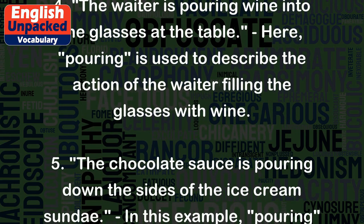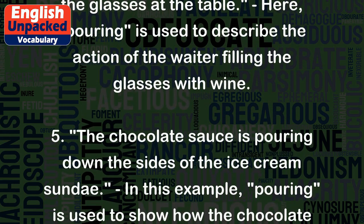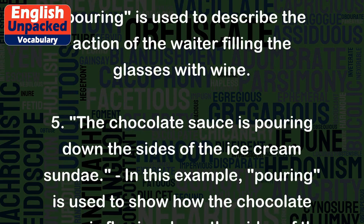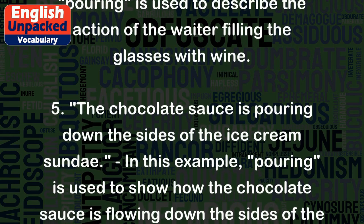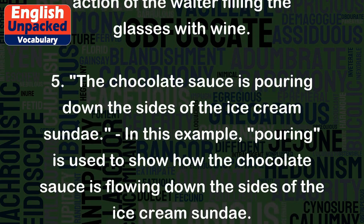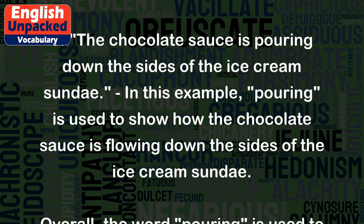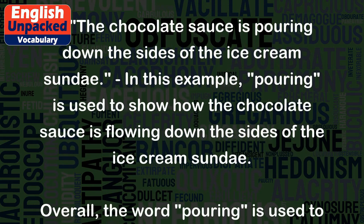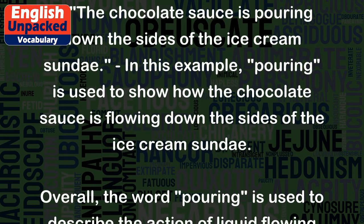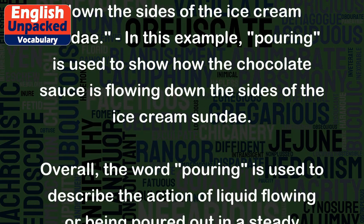Five: The chocolate sauce is pouring down the sides of the ice cream sundae. In this example, 'pouring' is used to show how the chocolate sauce is flowing down the sides of the ice cream sundae.